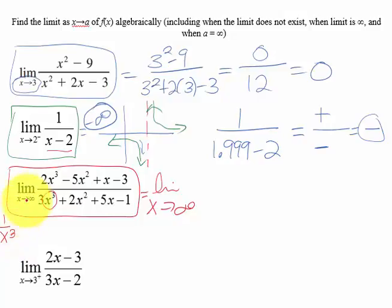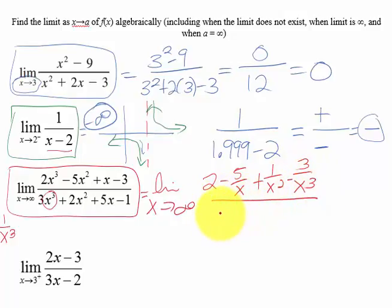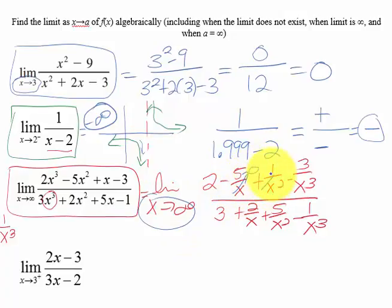If I multiply the numerator by 1 over x to the third, I will have 2 minus 5 over x plus 1 over x squared minus 3 over x to the third, and in the denominator, I will have 3 plus 2 over x plus 5 over x squared, and then minus 1 over x cubed. Now we are actually ready to let x go to infinity. Anything with a constant numerator, denominator becoming large, going to infinity, will make the fraction go to 0. So all of those are gone, and we are left with 2 thirds.